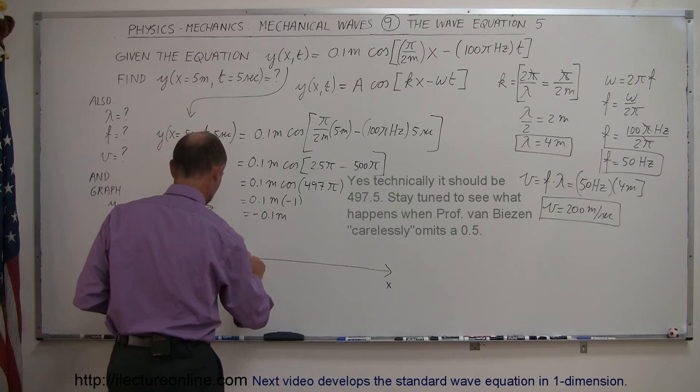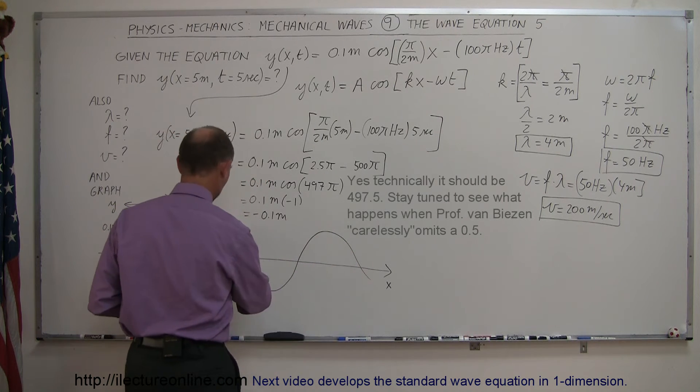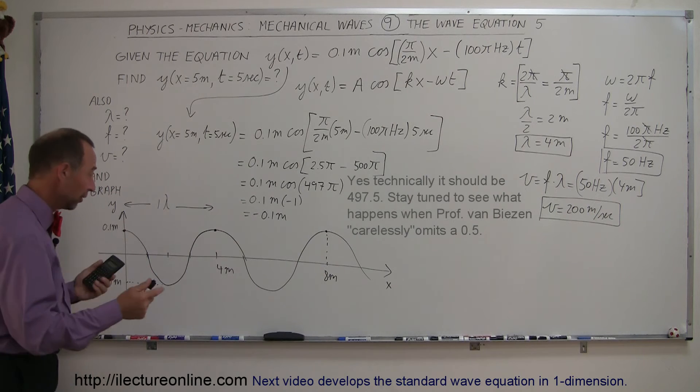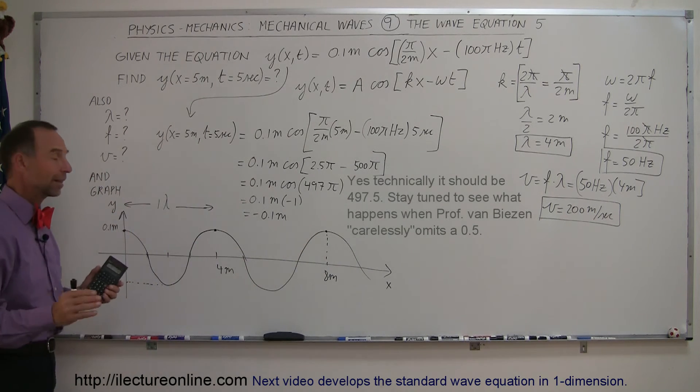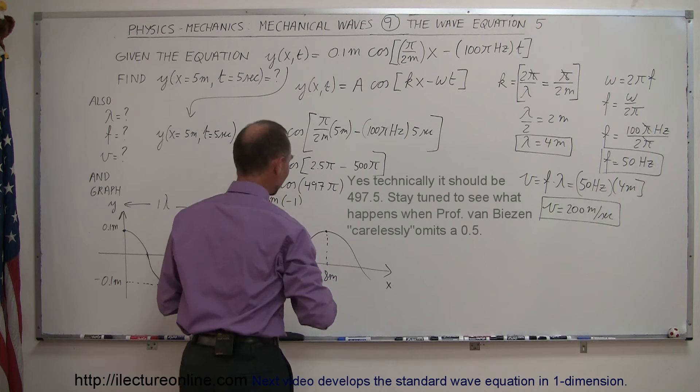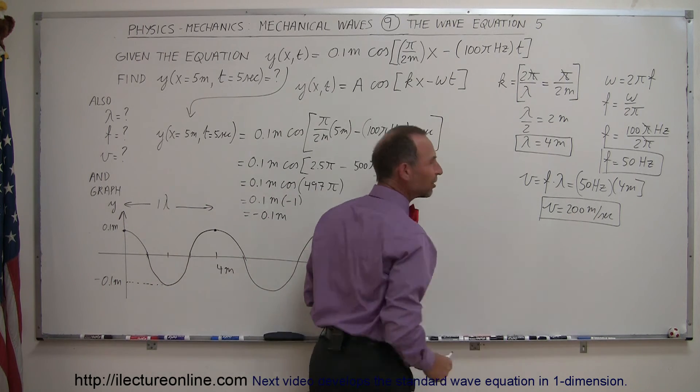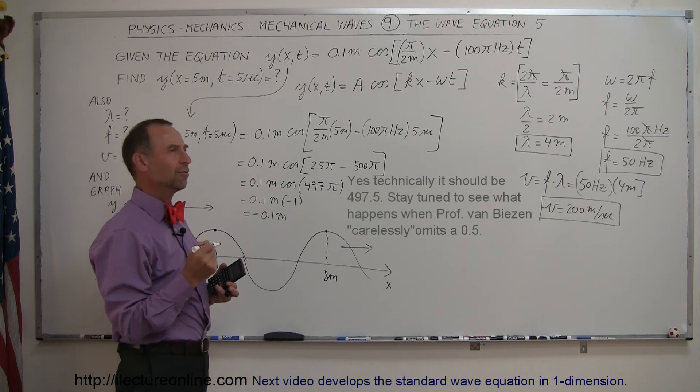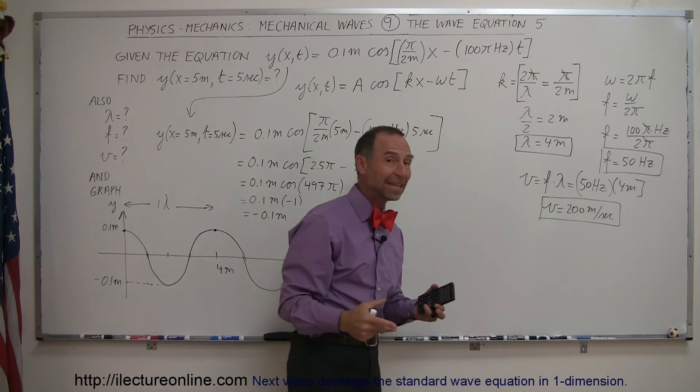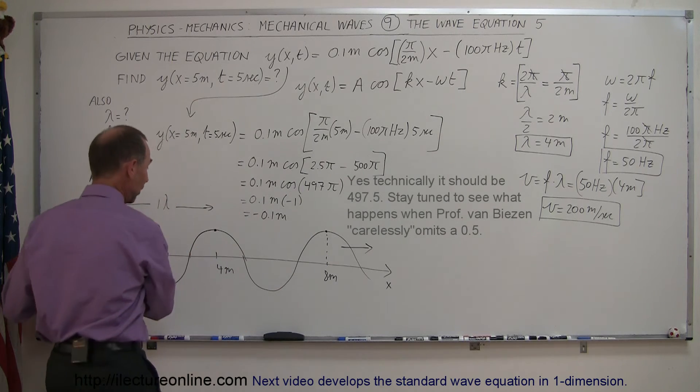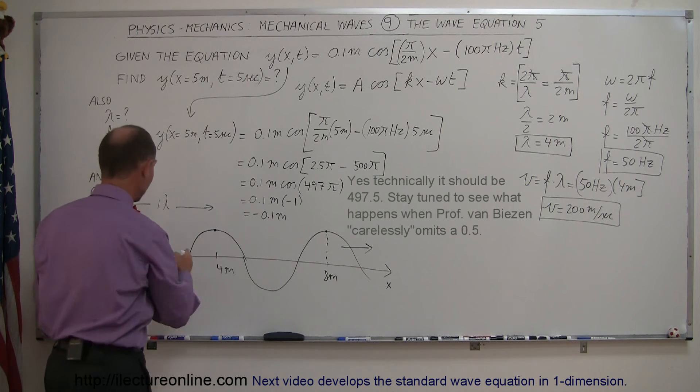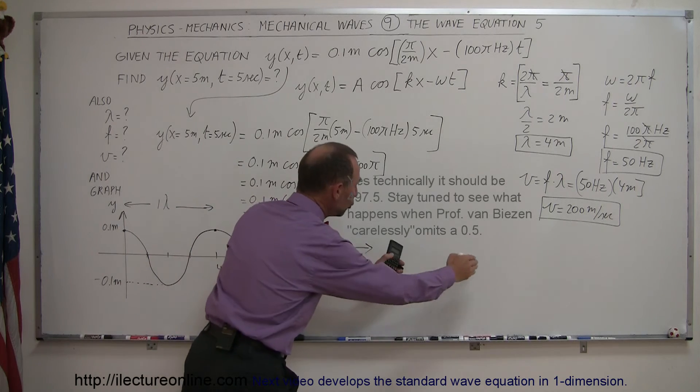Notice this is only at t equals 0. This wave will be moving to the right at some velocity. We found the velocity to be 200 meters per second. If the wave moves 200 meters per second and the wavelength is 4 meters, if we divide 4 meters into 200 meters, we get 50 wavelengths. So in one second, this wave travels to the right 50 wavelengths. After 5 seconds, that would be 250 wavelengths.